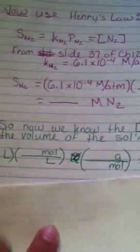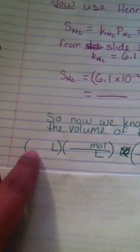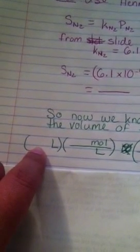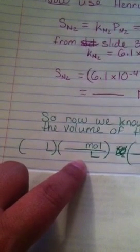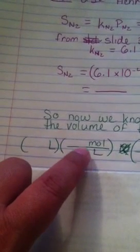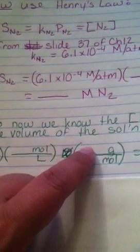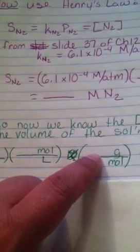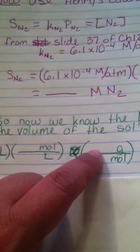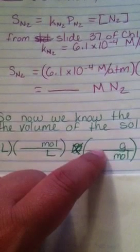So we're gonna know the molarity of nitrogen and the volume of the solution. So all you do is you take the volume of the aquarium that you guys were given. You're gonna multiply it by the molarity from up here. And then you're gonna multiply that by the molecular weight of N2. Not just N1, because there's not a single nitrogen, it's diatomic.